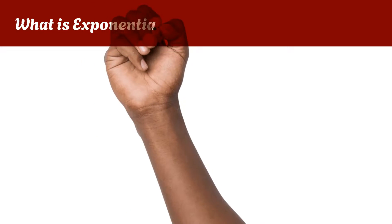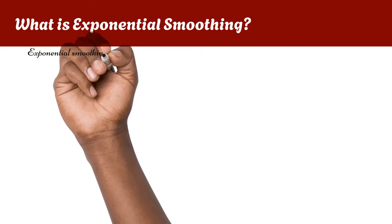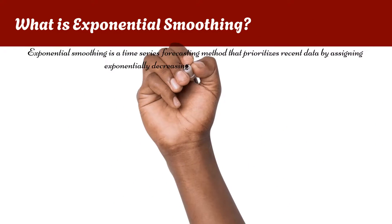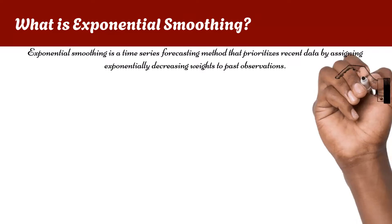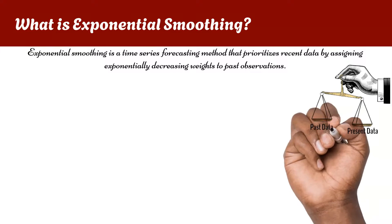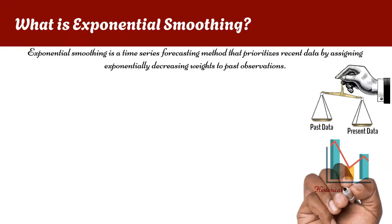Exponential smoothing is a widely used forecasting method in the context of operations and supply chain management. Similar to the weighted moving average, it is a time series forecasting technique that assigns exponentially decreasing weights to past observations, with more recent data points receiving higher weights. This approach is particularly useful for capturing trends and patterns in historical data.